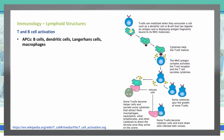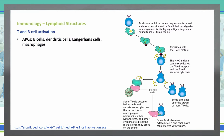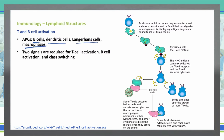Let's talk about how T cells and B cells are activated. First, what are APCs? APCs are B cells, dendritic cells, Langerhans cells, and macrophages. We need two signals to activate our T cells or B cells, or to have class switching occur.